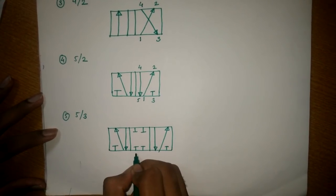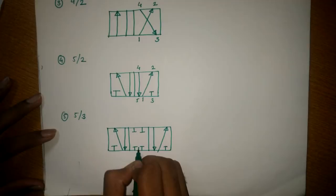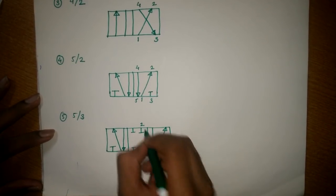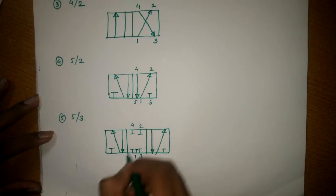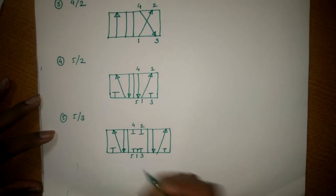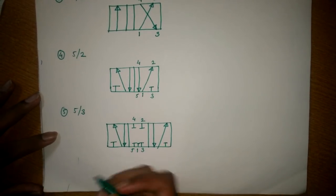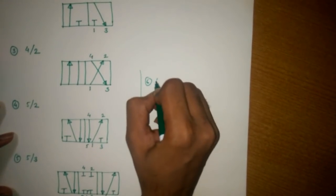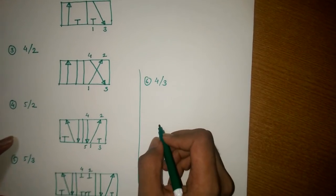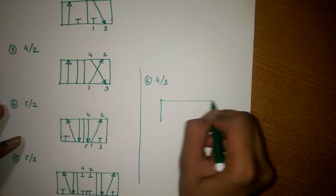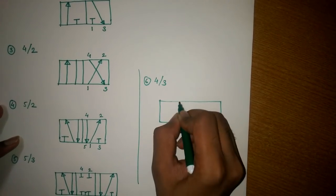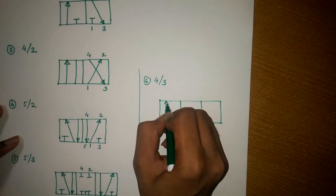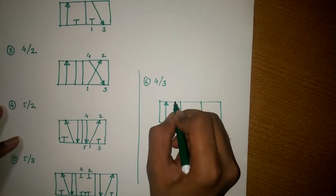For the 5/3 valve, this is one, two, three, four, and five. One more type is the 4/3 valve — '3' means three boxes. This is your first box.